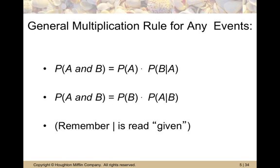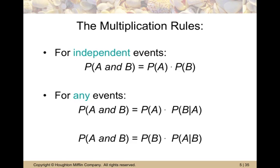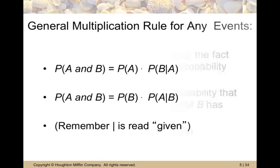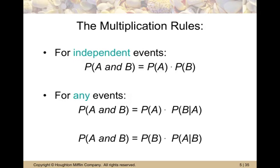The general multiplication rule for any events is that the probability of A and B both occurring is the probability of A times the probability of B given that A already occurred. You can also express it the other direction: the probability of B times the probability of A given B. So to summarize: for independent events it's just P(A) times P(B), and for any events it's either P(A) times P(B|A), or P(B) times P(A|B).